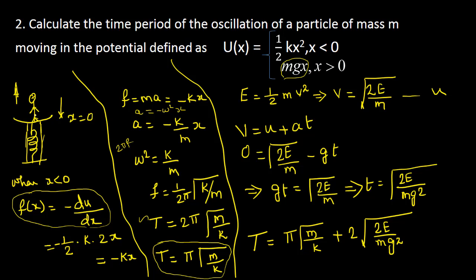The total energy E equals (1/2)mv² at position x = 0, since at the origin all energy is kinetic. So E = (1/2)mv², which gives v = √(2E/m). This is the initial velocity as the particle crosses x = 0 and enters the gravitational region.